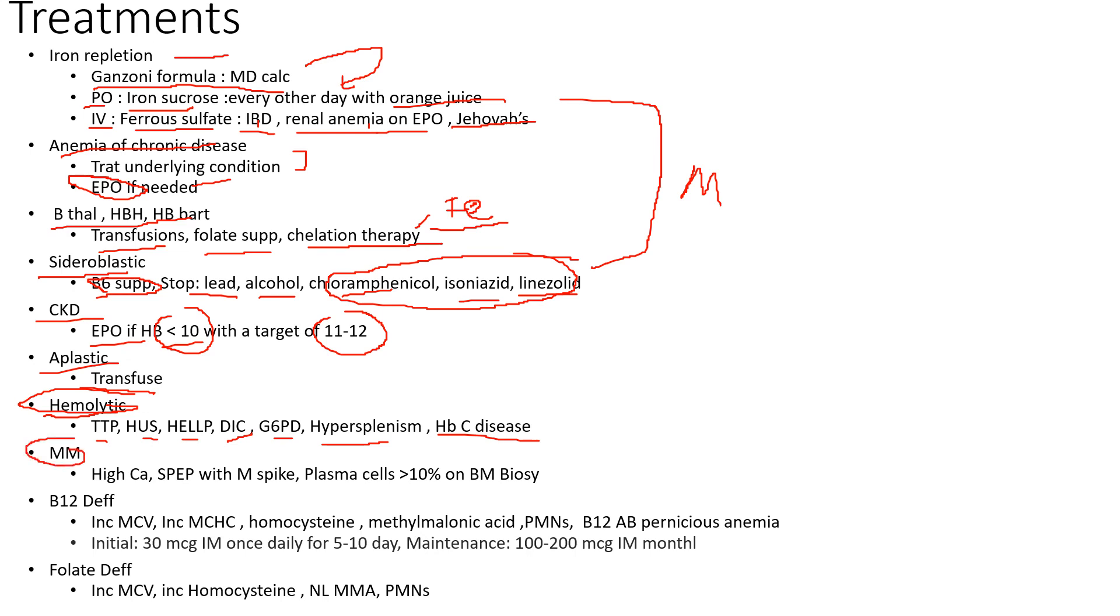Multiple myeloma—for our megaloblastic case we have this high calcium state. Remember you do the SPEP with the M spike, and plasma cells are going to be high on the bone marrow biopsy. And now our vitamin deficiency is B12 and folate. B12 you're going to have this high MCV.